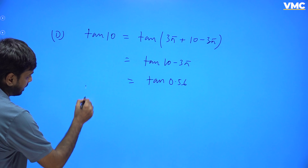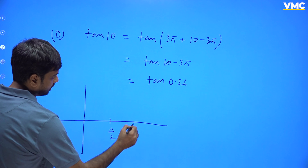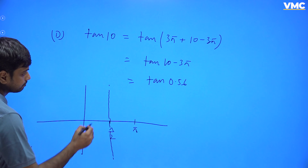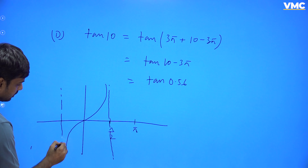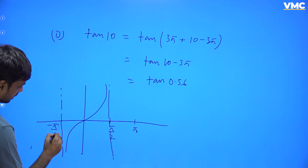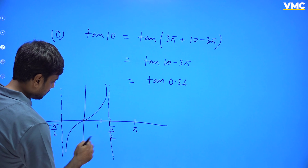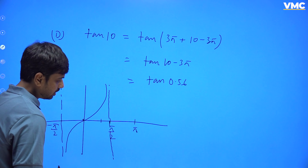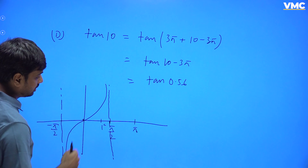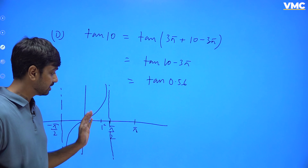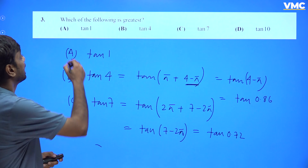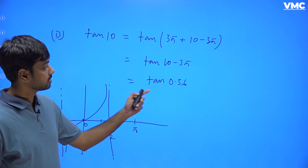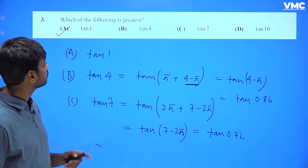When you draw the graph of tan, there are asymptotes at π/2. In the interval −π/2 to π/2, the value of tan increases as the angle increases. Since π/2 > 1, the angle 1 radian lies within this interval. So among tan(1), tan(0.86), tan(0.72), and tan(0.56), the greatest is tan(1). The correct answer is option A.